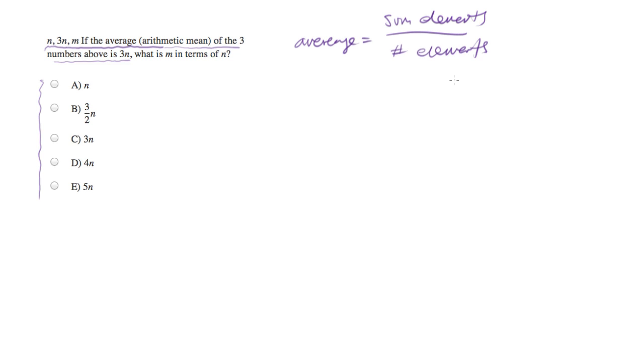So let's plug into that formula and see if we can move forward from there. We're told that the average is 3n. And if we sum the three elements, we'll get n plus 3n plus m divided by 3.